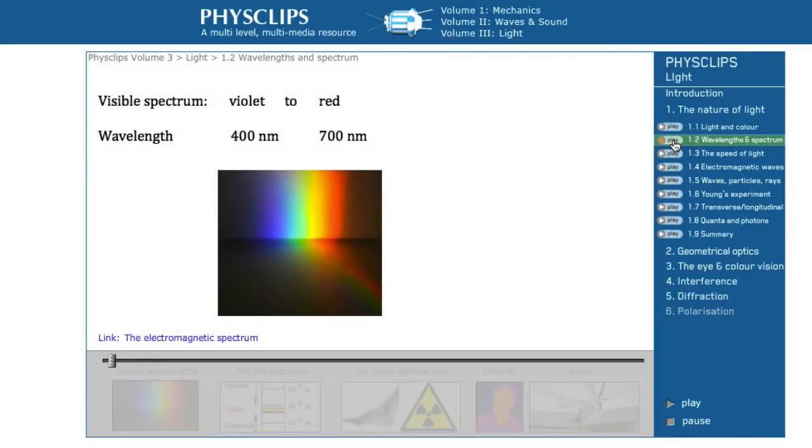Let's have a look at Joe explaining now how light fits into the electromagnetic spectrum. The spectrum of visible light covers wavelengths from about 400 to 700 nanometers, all those wavelengths less than a millionth of a meter.